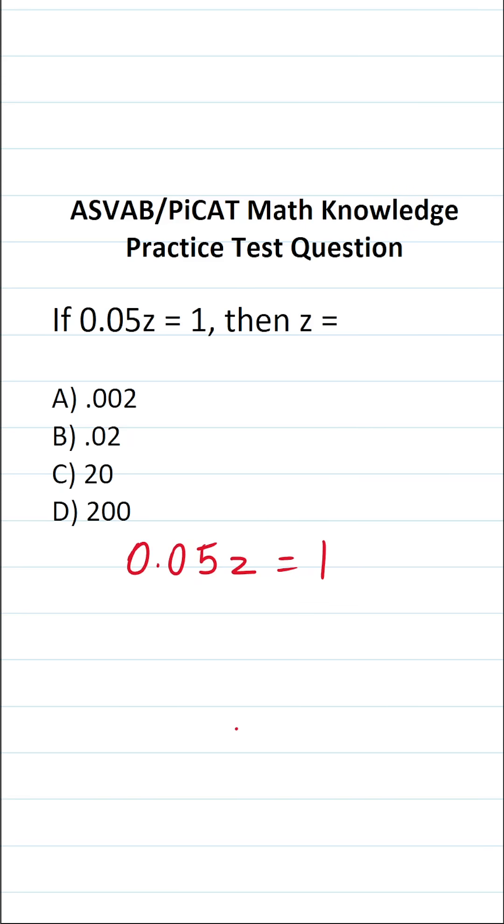As it happens, this is a one-step equation, and the only step we have to take to solve this one is to divide both sides of the equation by 0.05. In doing so, this crosses out, leaving us with z on this side.